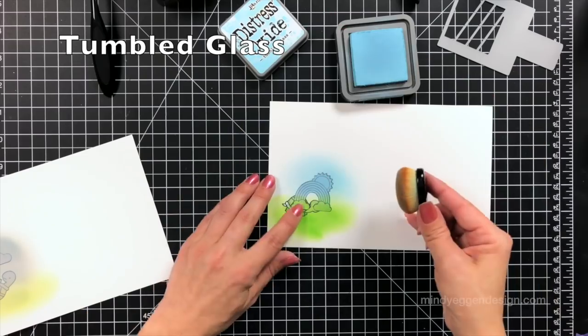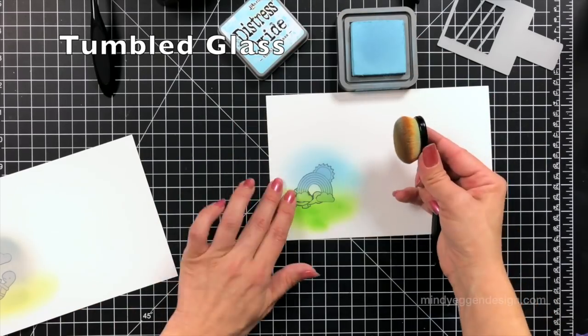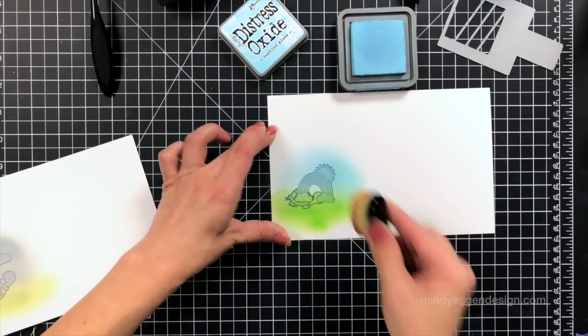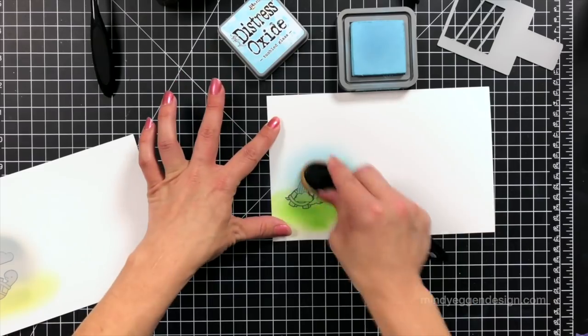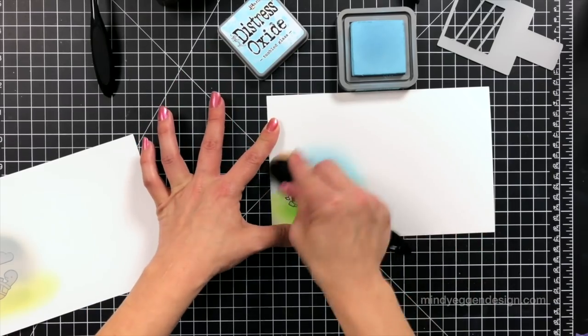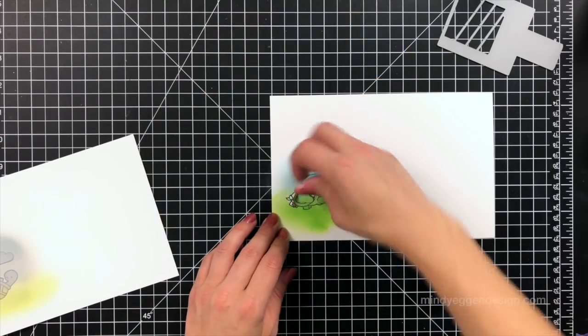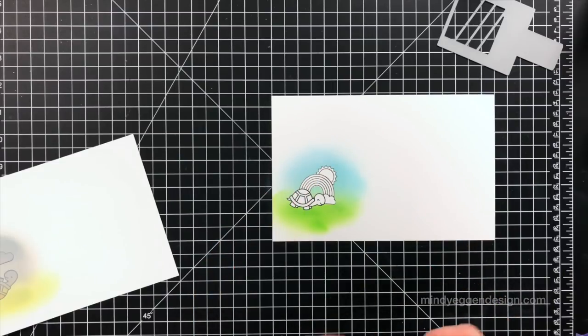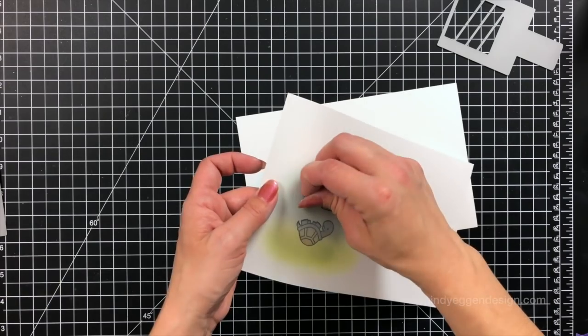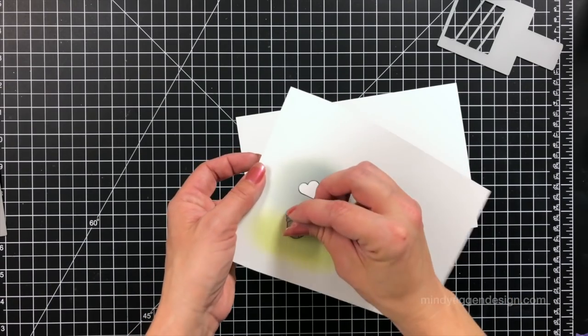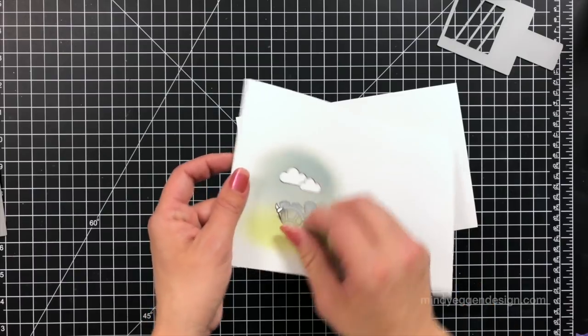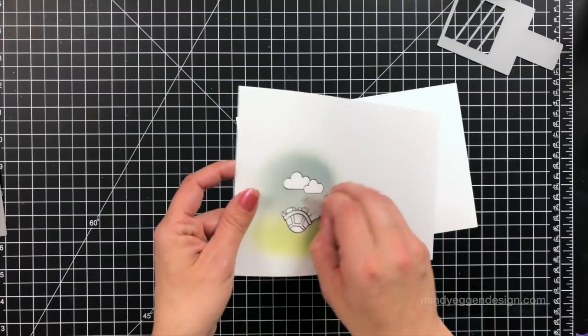Then I will ink blend some of the Tumbled Glass around my rainbow. You could also very easily color in these backgrounds with Copic markers too. Once I have my backgrounds all ink blended, I'll go ahead and remove the masks from them. I like to put my masks on before I do any Copic coloring, so if I do oops I didn't waste all my time coloring. Now I have my images here that are set to color, and same thing for my gloomy picture.